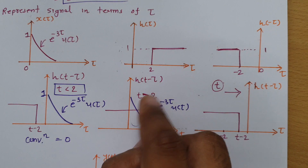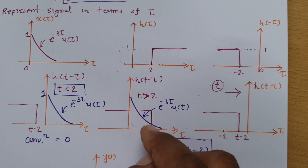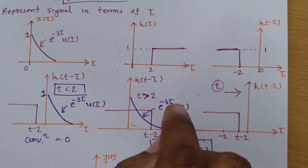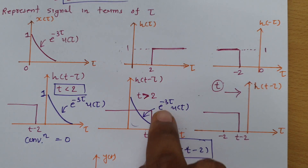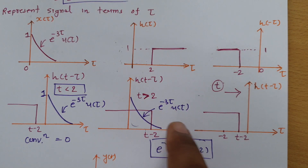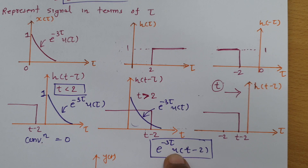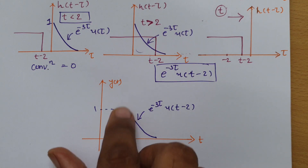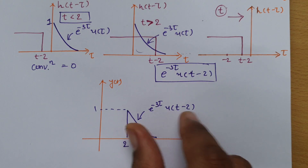For t greater than 2, h(t-τ) overlaps with x(τ). Multiplying e to the power minus 3τ by the unit magnitude of h gives e to the power minus 3τ. But since it only occurs for t greater than 2, we must use u(t-2) instead of u(τ). So the final resultant is e to the power minus 3τ into u(t-2).